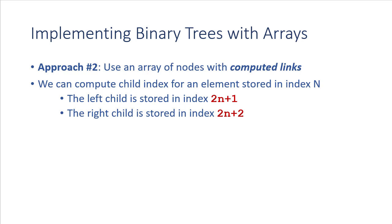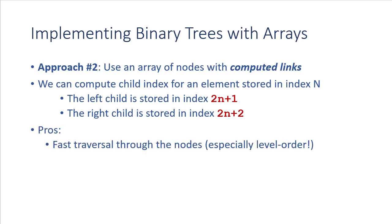We'll see several examples, but first the pros and cons. The first pro is that it's very fast to traverse through the nodes, especially for a level-order traversal. It also saves space for nearly complete trees since we compute the links rather than storing them. We don't need a separate node object — we store just the data reference in an array without storing any child links.